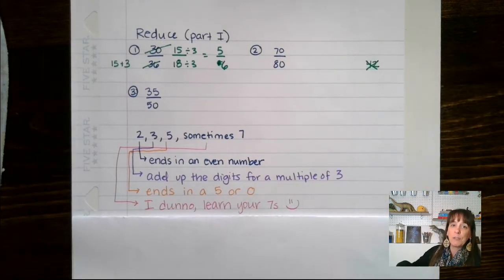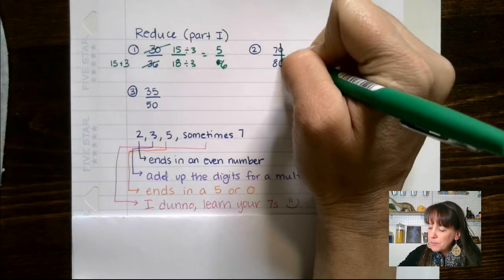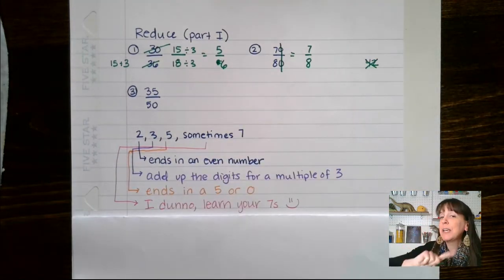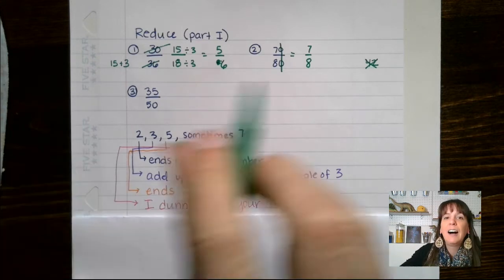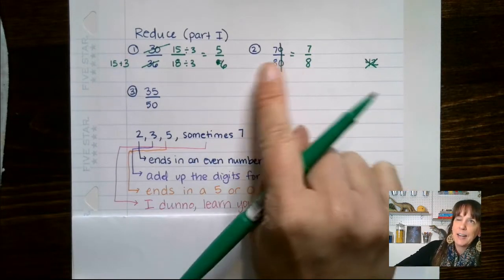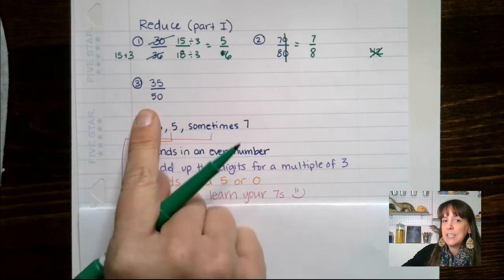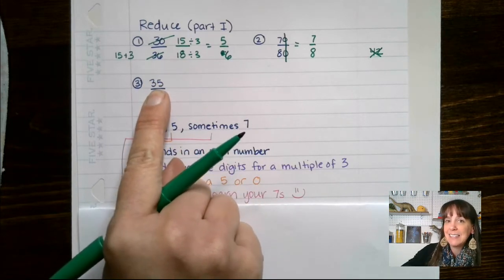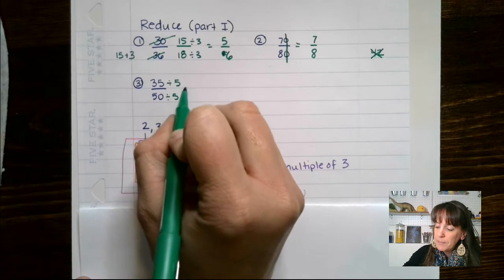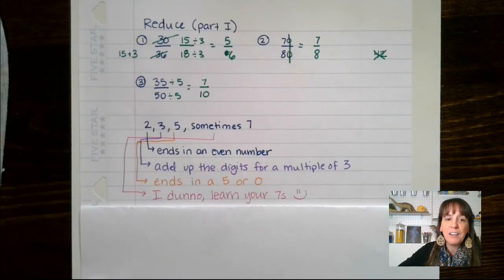For number two, we have 70 over 80. Both are even and I could cut them in half. However, all you have to do is lob those zeros off and you're left with 7 over 8. That only works for zeros — don't try this with your twos or fives. It works for zeros because we're essentially dividing by 10. For 35 over 50: I can't use my twos because 35 is not even. I can't use my threes because 5 plus 3 is 8, not a multiple of 3. So I divide by 5, and I end up with 7 over 10.